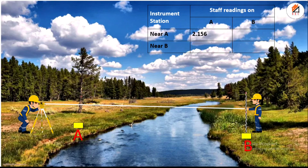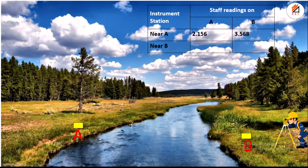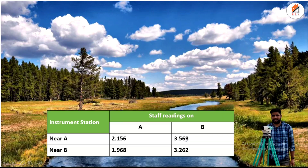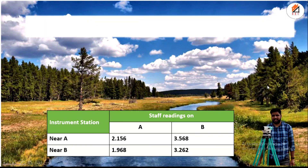Then we place the instrument at B and take the staff reading on B, which gives us 3.568. Then we move the instrument to B and take the staff reading at A, which gives us 1.968. So we now have all readings for both instrument positions at A and B.